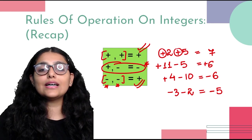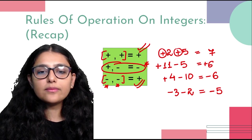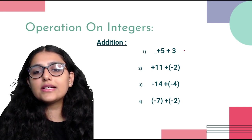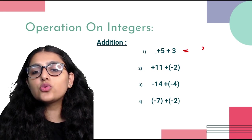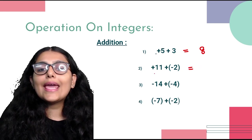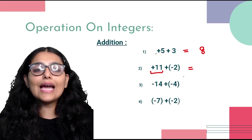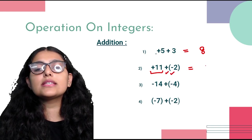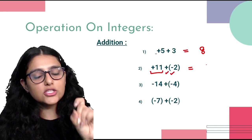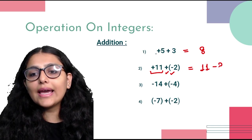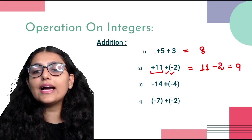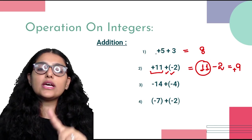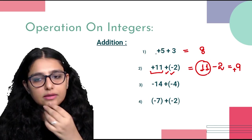Let's study addition in more detail. Plus 5 plus 3: two positive signs, answer is 8. Next, positive 11 plus negative 2: plus and minus gives minus, so this is 11 minus 2 = 9. It is positive 9 because the larger number 11 has a positive sign. Then, minus 14 plus negative 4: plus and minus gives minus, so minus 14 minus 4. Two negative signs → addition: 14 + 4 = 18, answer is minus 18.